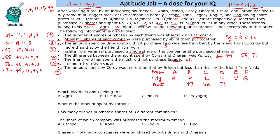Ishita from Varanasi purchased a single share of each company she bought. Looking at the data, only the person with total 32 has purchased single shares of each company, so Ishita has total 32. Brinda at 47 is more than Agra's person (Anita), so Anita should be 29. The remaining person is Farhan, who has total 55.